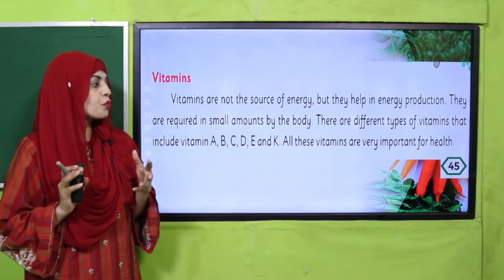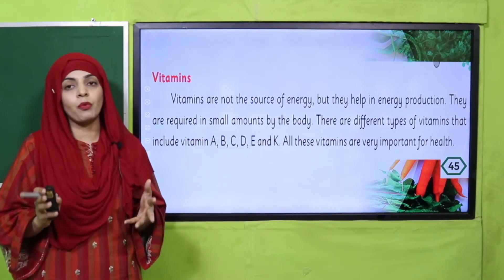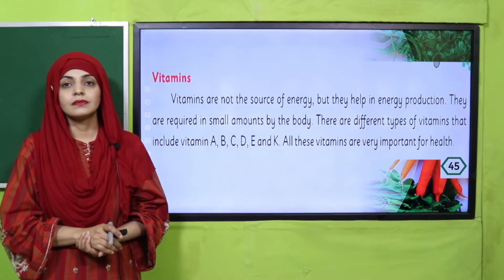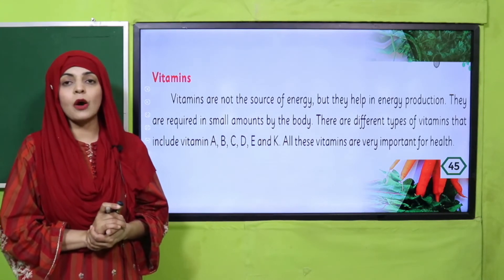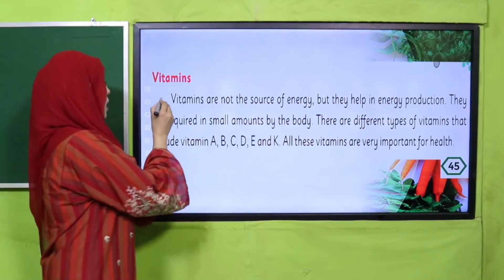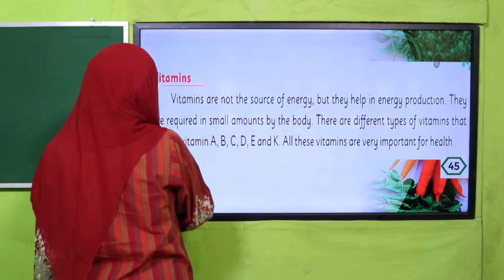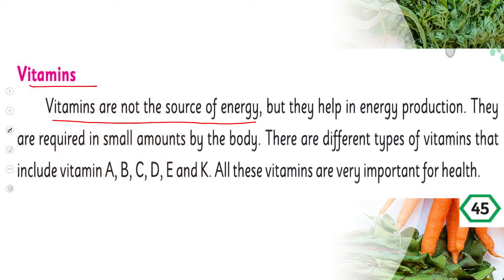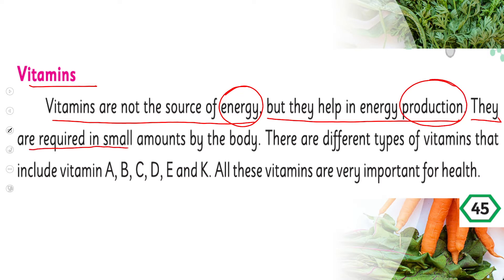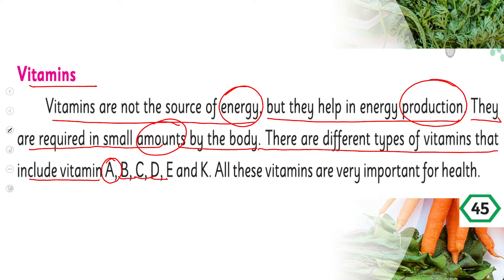Please open page 45 in your science books. We will start reading. Put your fingers where I read. Vitamins are not the source of energy but they help in energy production. They are required in small amounts by the body. There are different types of vitamins: A, B, C, D, E, and K. All these vitamins are very important for health.